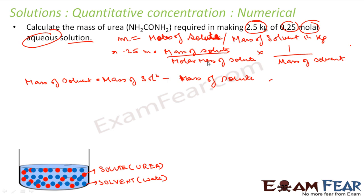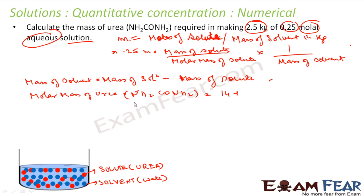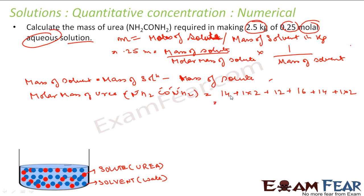What is the molar mass of urea? Urea is NH₂-CO-NH₂. So: nitrogen 14 × 1, hydrogen 1 × 2, plus carbon 12, oxygen 16, nitrogen 14 again, then 2 hydrogen 1 × 2. So the molar mass of urea is 60 grams per mole.